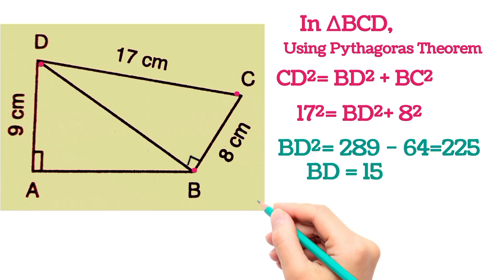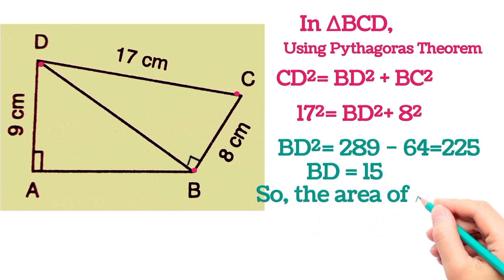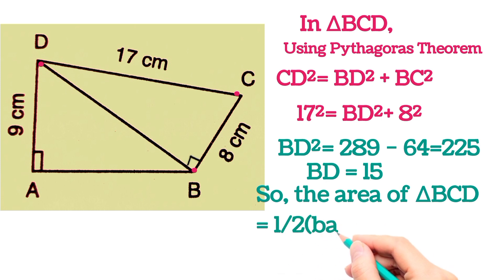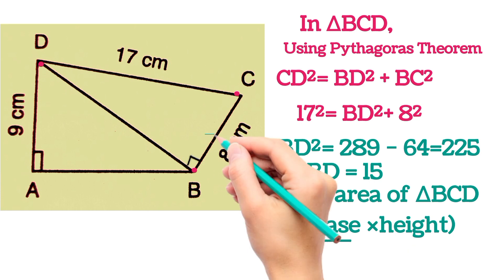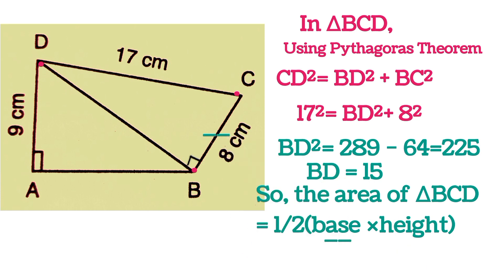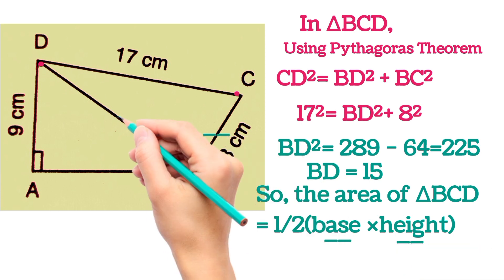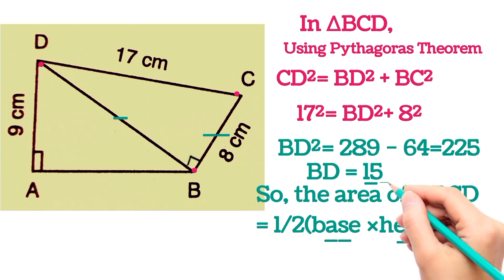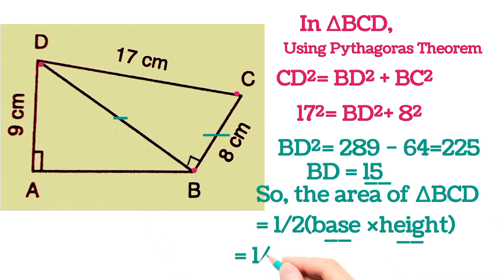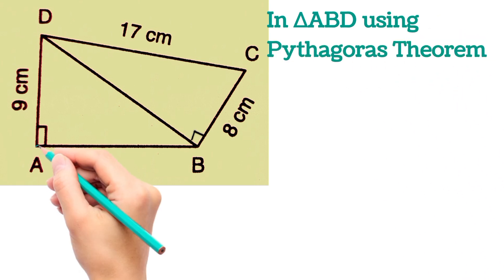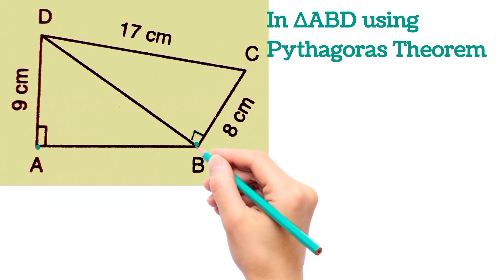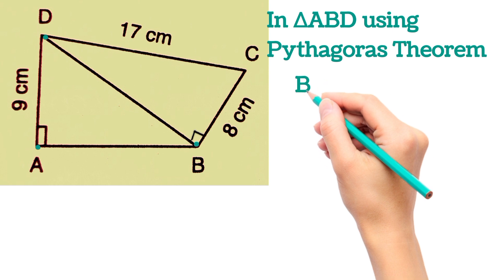The area of triangle BCD is ½ × base × height. The base is BC = 8 cm and the height is BD = 15 cm, so the area is ½ × 8 × 15 = 60 cm². Now we take triangle ABD.